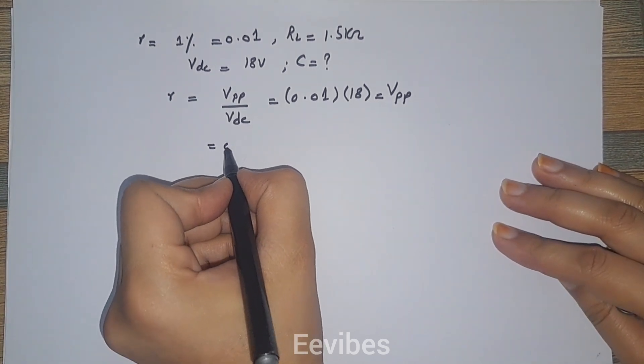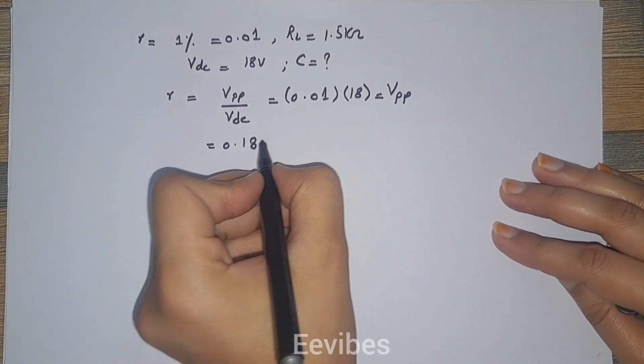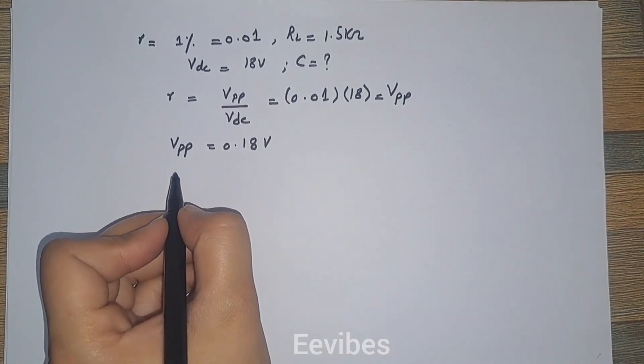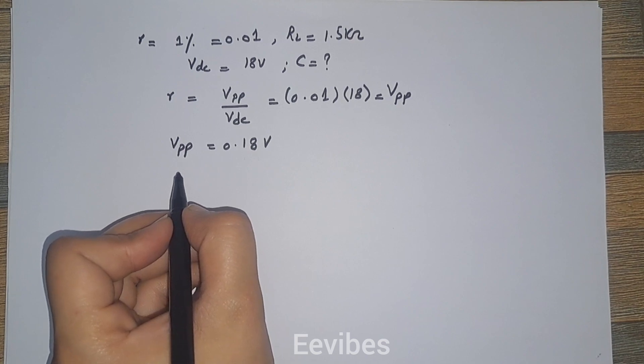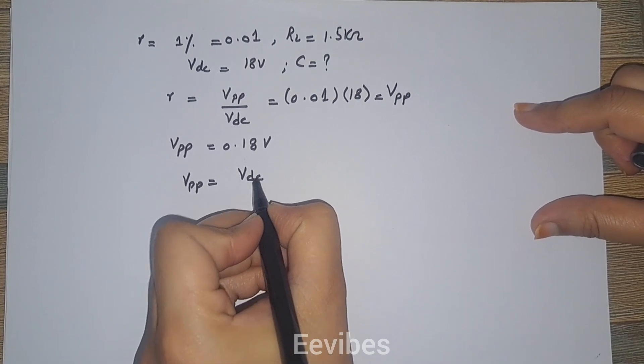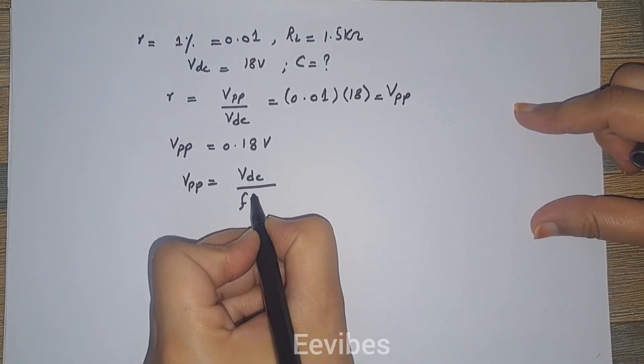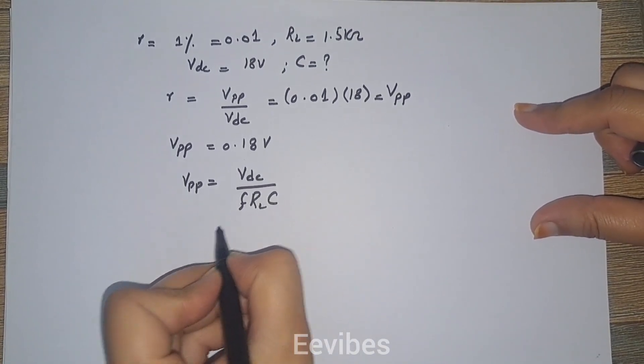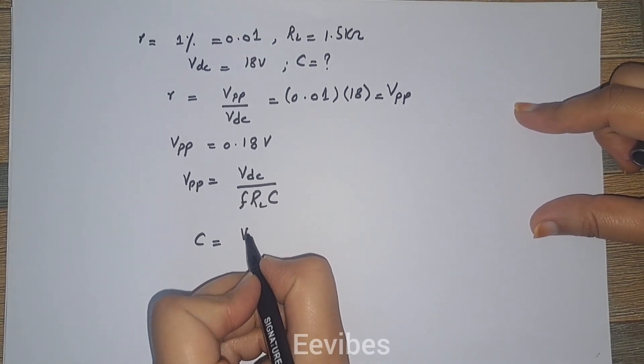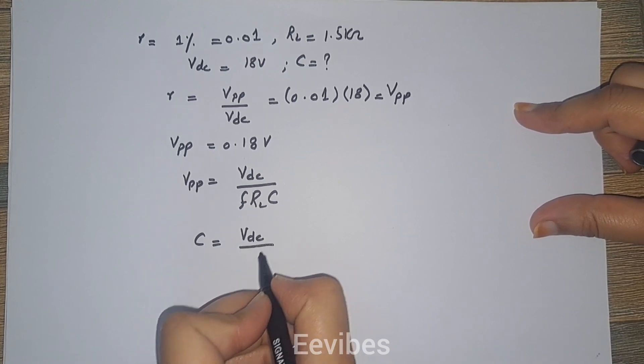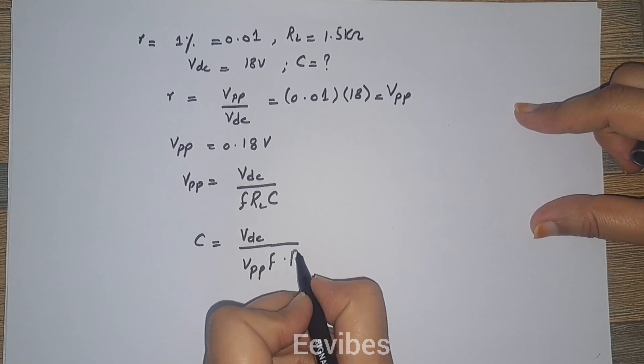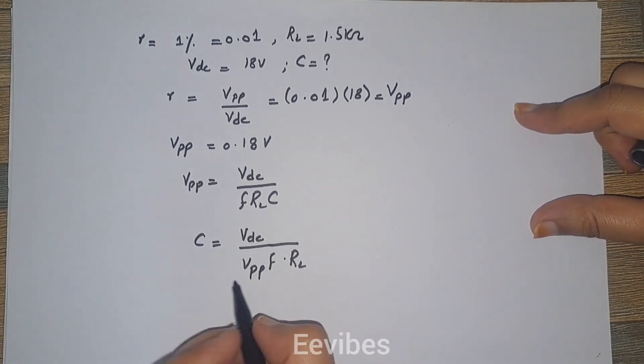From the derivation of the ripple factor, you know that V peak to peak is equal to VDC divided by frequency RL into C. From here you can simplify the expression, and thus you can get C is equal to VDC divided by V peak to peak into frequency into the load resistor RL.